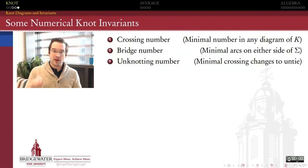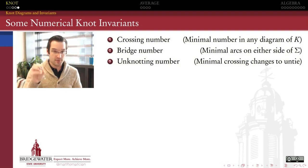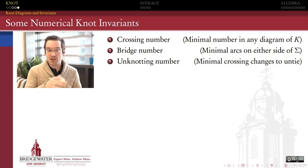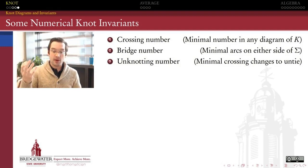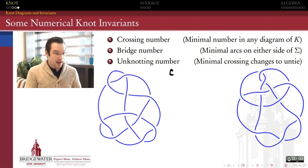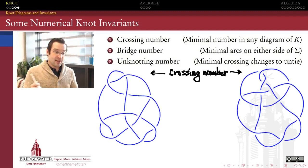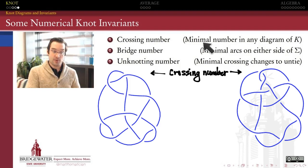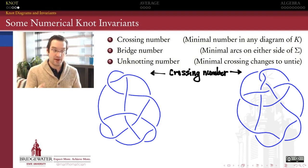So what are some invariants we could use to study knots? Some of the simplest assign just a positive integer to a given knot diagram; once we verify that number is not changed by the three Reidemeister moves, it becomes a property of the knot and not of the diagram. Three of the most interesting are called the crossing number, the bridge number, and the unknotting number. The crossing number of a knot is the minimal number of crossings in any diagram of that knot.